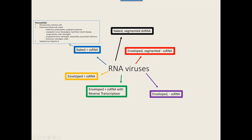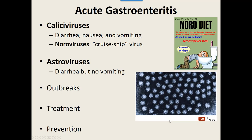We're going to move on to still more naked, positive-sense, single-stranded RNA viruses with our next families: the Caliciviridae and the Astroviridae. Both of these families cause gastroenteritis — diarrhea and vomiting. The Caliciviridae generally causes all of it: diarrhea, nausea, and vomiting. One particular group of viruses in this family are the noroviruses, and there's more than one norovirus.